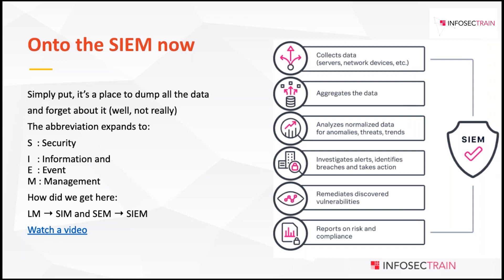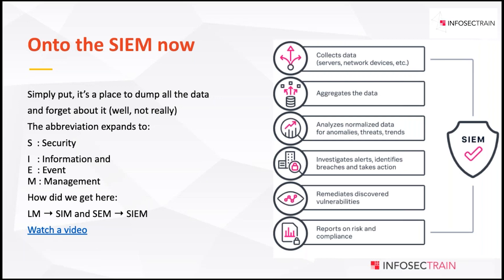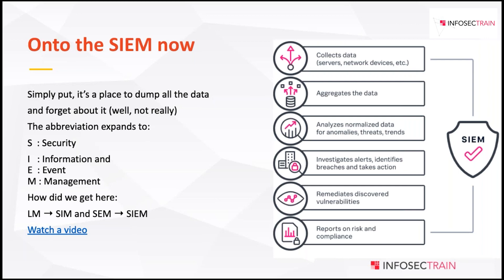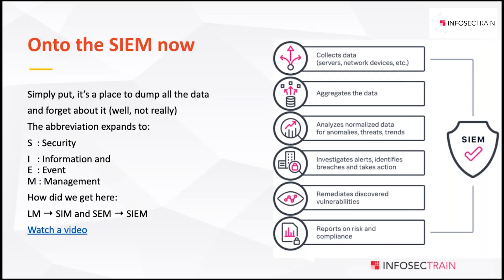Information is any piece of data flowing from one place to another that generates a string of data — information is always intelligent. What's an event? People sometimes get confused — information and events are essentially made of the same substance: data. The difference is that an event is more important. For example: somebody logged in to a computer — that's information. Somebody logged out — that's also information. But multiple login failures — that's an event, suggesting someone might be trying to brute-force access.